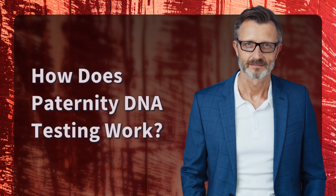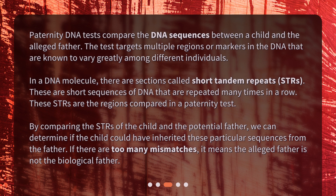How does paternity DNA testing work? Paternity DNA tests compare the DNA sequences between a child and the alleged father. The test targets multiple regions or markers in the DNA that are known to vary greatly among different individuals. In a DNA molecule, there are sections called short tandem repeats, or STRs. These are short sequences of DNA that are repeated many times in a row, and these STRs are the regions compared in a paternity test. By comparing the STRs of the child and the potential father, we can determine if the child could have inherited these particular sequences from the father.